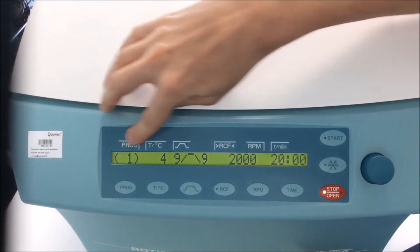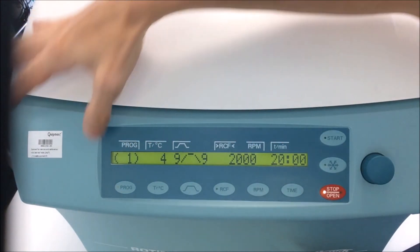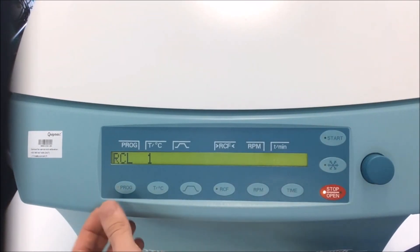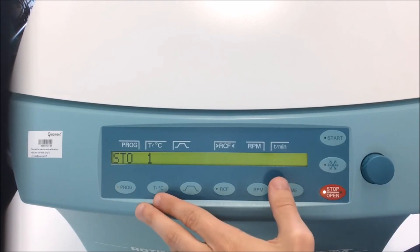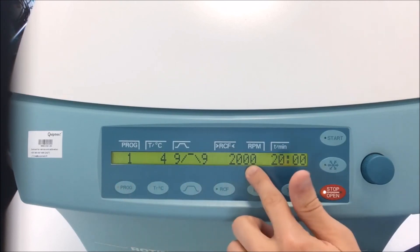If I want to save this new configuration as program number 1, I can select program, press on prog again. And you got STO, that's for storage. So you can store this new program and replace it. So now my default program number 1 is this one.